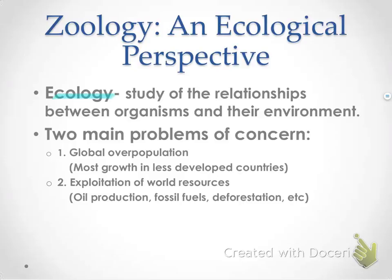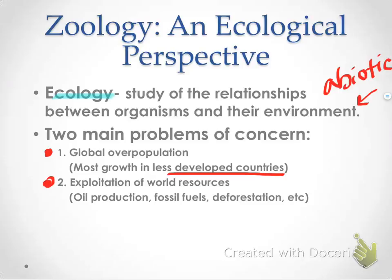From an ecological perspective, ecology is the study of the relationships between organisms and their environment. The environment isn't necessarily a living thing — you could talk about animals and plants, but this also includes abiotic factors. There are two main problems of concern: global overpopulation, which results in more and more habitat destruction and animals being removed from where they're living — and the most growth is in less developed countries — and then there's also the exploitation of resources such as oil, fossil fuels, and deforestation, all of which affect the animals that live in the world.